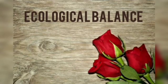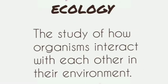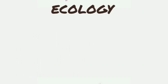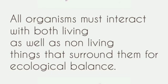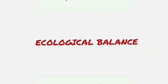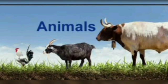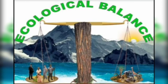Now we come to ecological balance, but before that we should know what ecology is. Ecology can be defined as the study of how organisms interact with each other in their environment. All organisms must interact with both living as well as non-living things that surround them. Ecological balance is a term used to describe the equilibrium between living organisms — such as human beings, plants, and animals — and their environment. This balance is very important because it ensures the survival, existence, and stability of the environment.